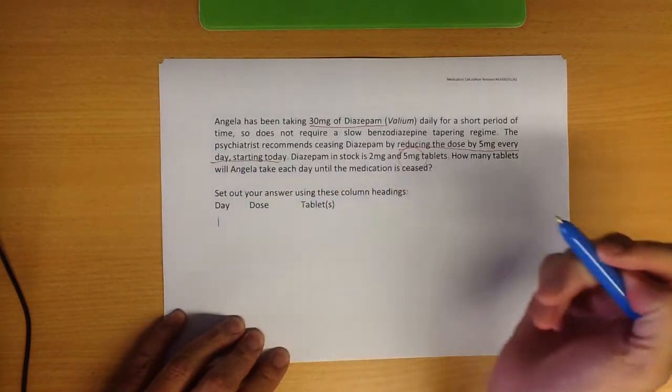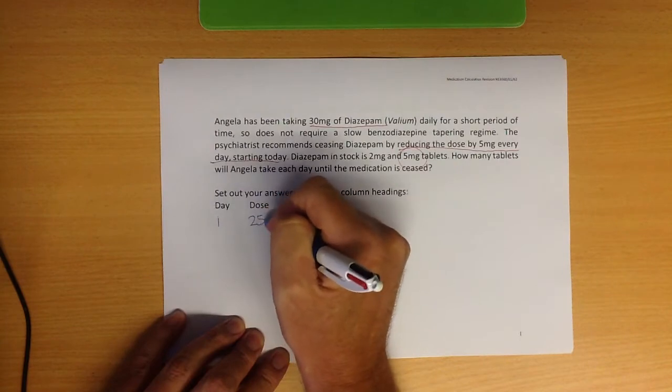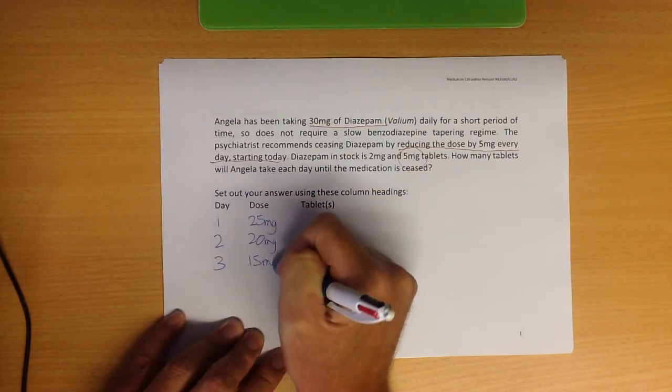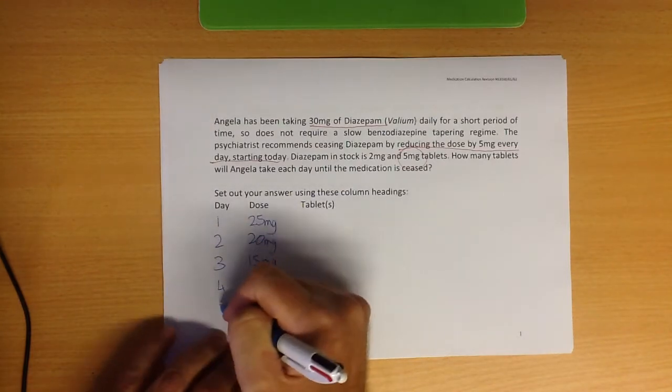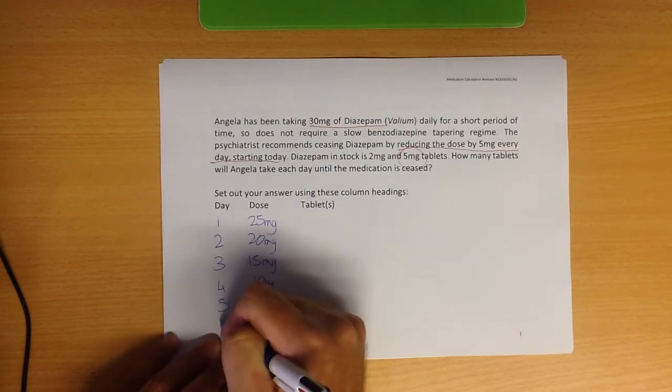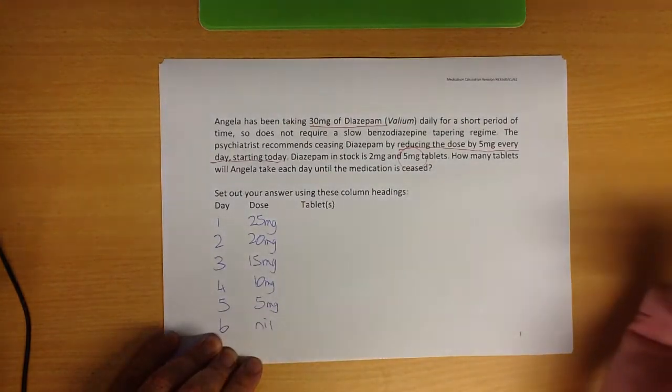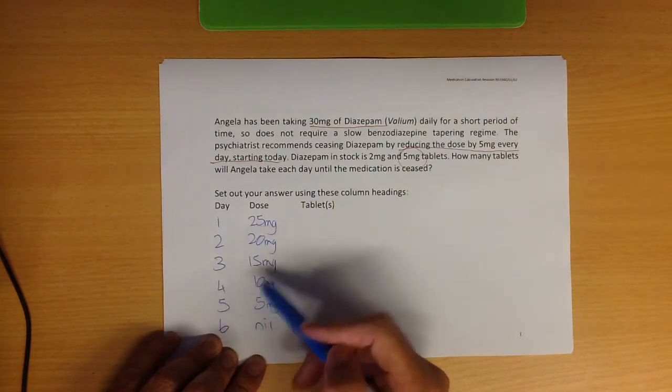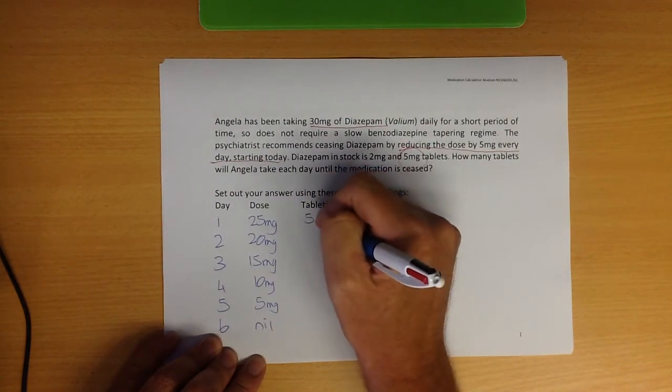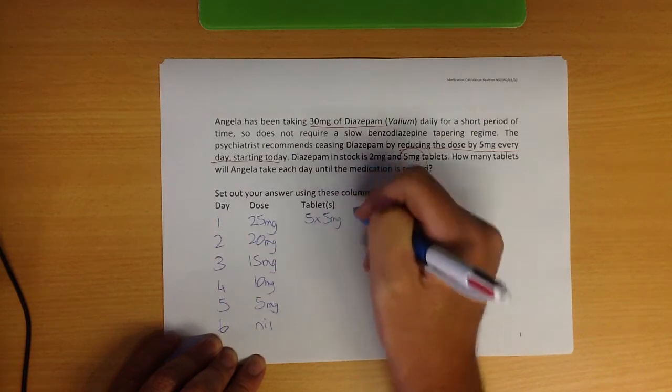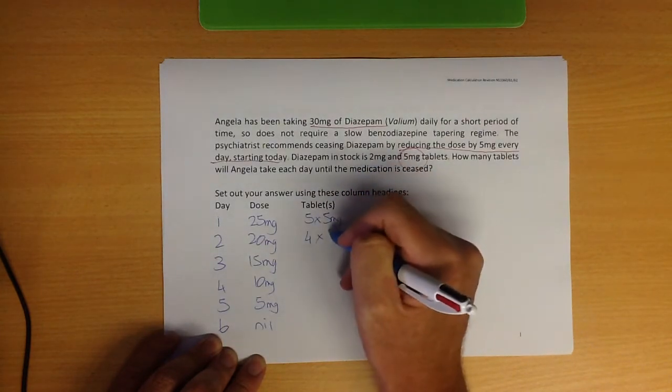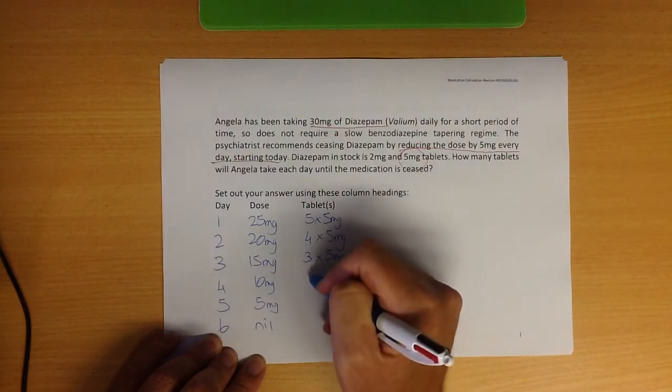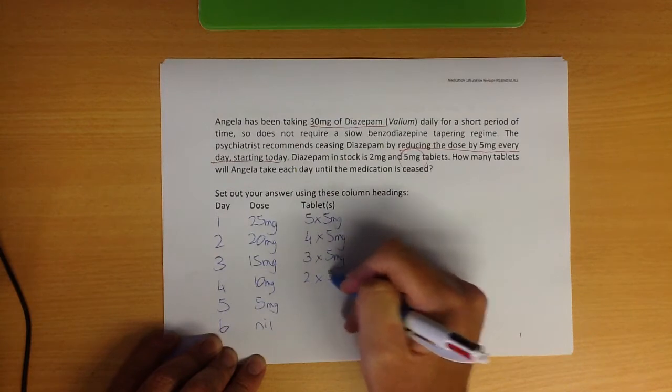Let's make it easier on ourselves. Today she's coming down from 30 to 25 milligrams. Day 2 will be 20 milligrams, day 3 will be 15, day 4 will be 10, day 5 will be 5 milligrams, and then on day 6 it will be ceased. All we have to do is just work out how many 5 milligram tablets she needs. It's that simple old what you want over what you've got. So we've got 25 milligrams over 5 milligrams, that will be 5 by 5 milligram tablets.